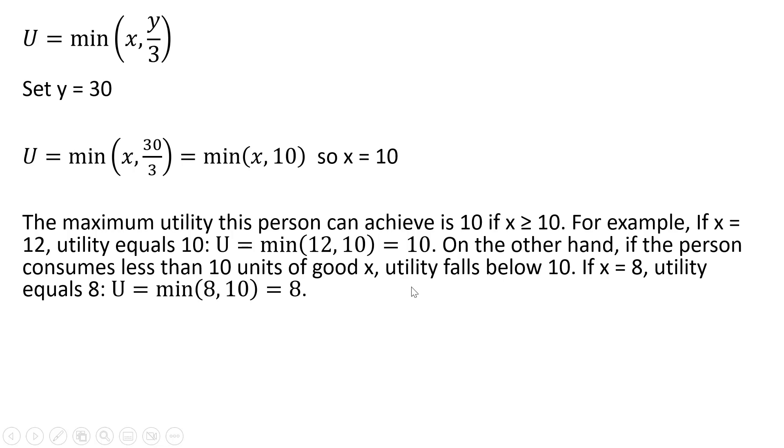On the other hand, if the person consumes less than 10 units of good x, utility falls below 10. If x equaled 8, for example, utility will only equal 8. The utility of the minimum of 8 or 10 here is just going to be 8.